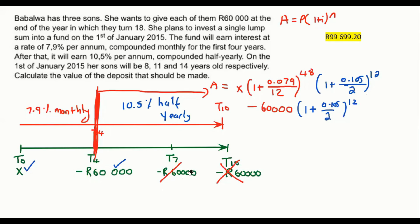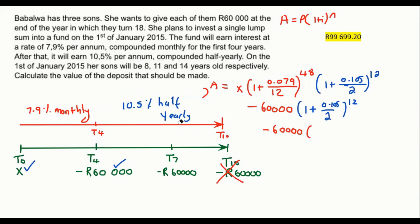Moving on to the next 60,000 Rand at T7 — that's minus 60,000 again. This one also only has the blue interest rate because it starts at T7, and it's only got three years left to T10. So I use (1 + 0.105/2)^6 — that's two times three, which is six.